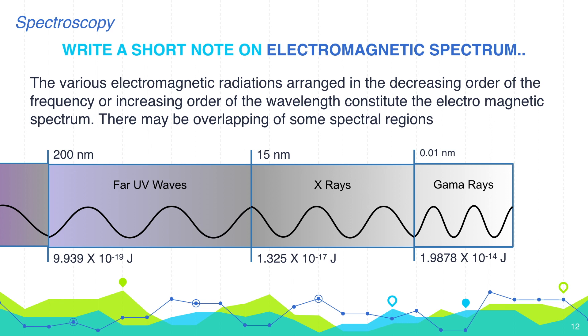If we further go higher in energy beyond 10 to the power minus 17 joules, X-rays start. These rays are having very high energy and can easily pass through human body and many objects. Therefore, they are used in X-ray imaging and security scanners.